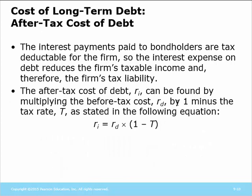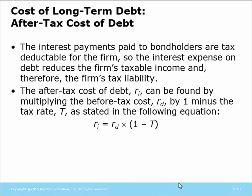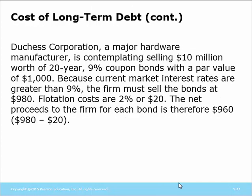The after-tax cost is that rate of return multiplied by one minus the tax bracket. Our before-tax cost is representative of a yield number — the part of the expenses that are actually paid. But the government allows us to subsidize debt. So we multiply the before-tax cost of debt times one minus T, which is the corporate tax bracket.